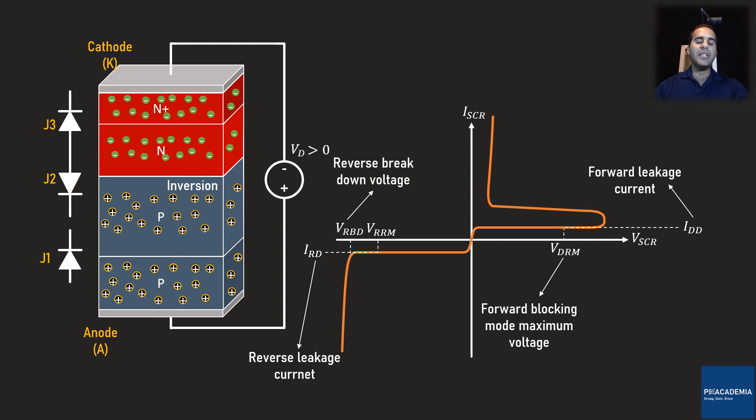Through gradually increasing Vd, it surpasses VDRM and still the forward leakage current flows through the device. But, once Vd equals the break-over voltage VBO, the inversion process, as I discussed earlier, happens and the device turns on and the voltage gets very small and the current skyrockets.